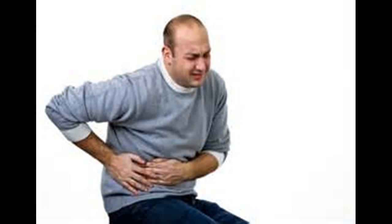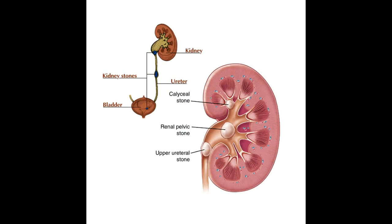Doctors do not always know what causes a stone to form. While certain foods may promote stone formation in people who are susceptible, scientists do not believe eating any specific food causes stones in people who are not susceptible. A person with a family history of kidney stones may be more likely to develop stones. Urinary tract infections, kidney disorders such as cystic kidney diseases, and certain metabolic disorders such as hyperparathyroidism are also linked to stone formation. More than 70% of people with a rare hereditary disease called renal tubular acidosis develop kidney stones. Cystinuria and hyperoxaluria are two other rare inherited metabolic disorders that often cause kidney stones.